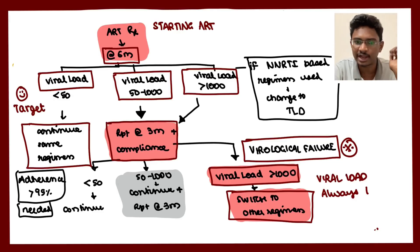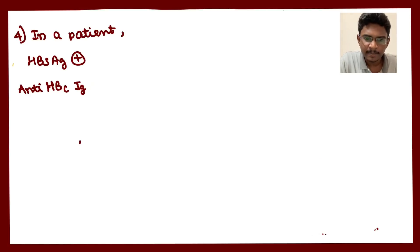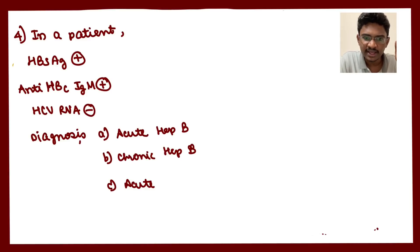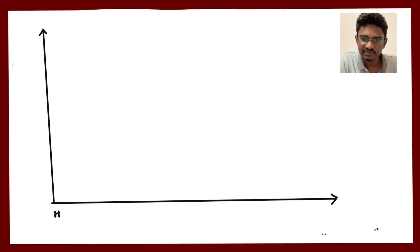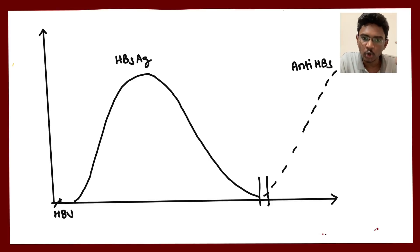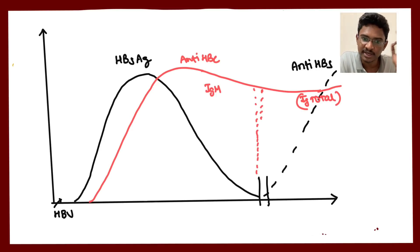A serology question: HBsAg is positive, IgM anti-HBc is positive, and HCV RNA is negative. In acute hepatitis B, HBsAg rises first, along with HBV DNA. After some time, IgM anti-HBc rises and remains positive even during the window period — in the window period, nothing is positive except IgM anti-HBc. The diagnosis here is acute hepatitis B.